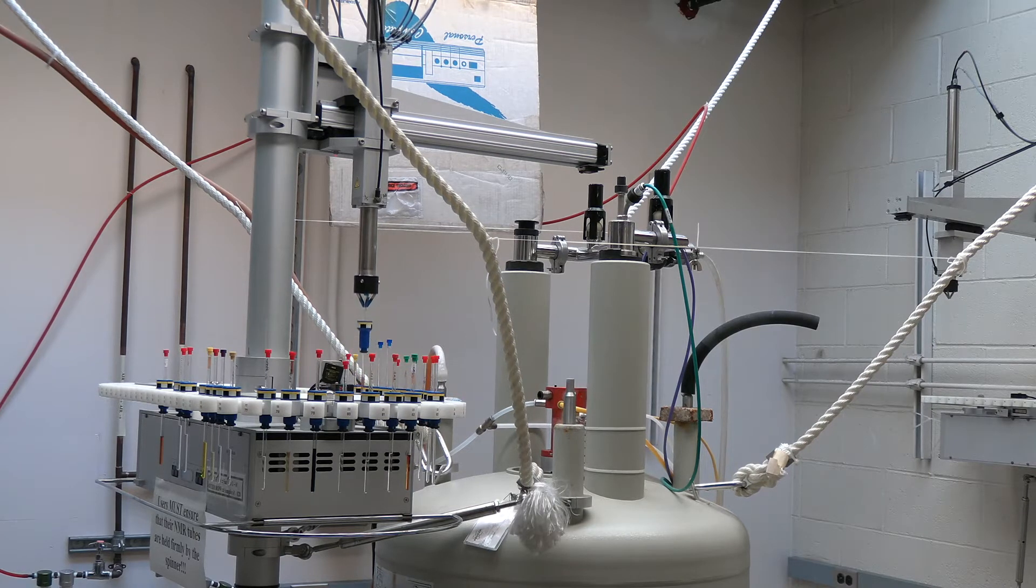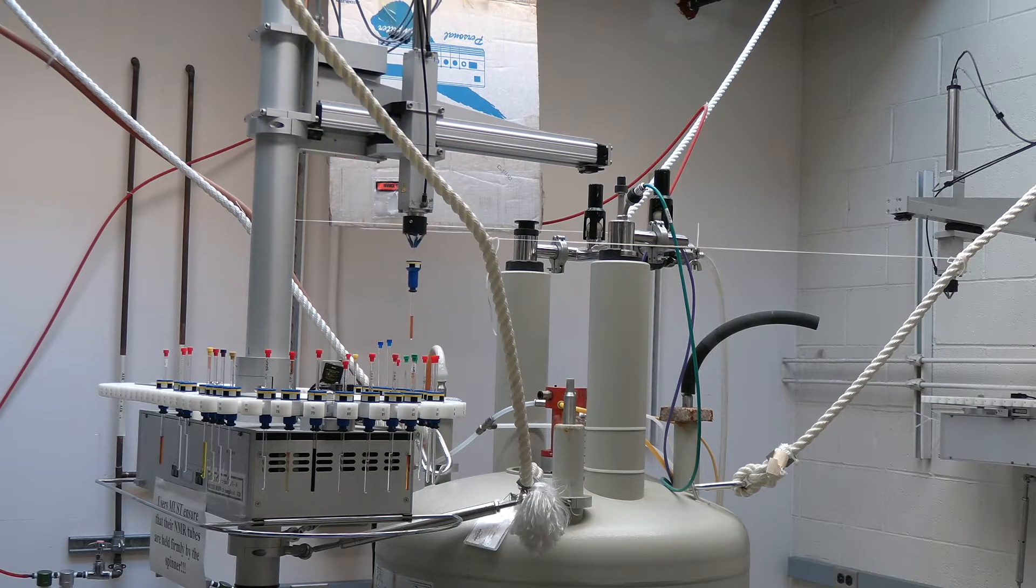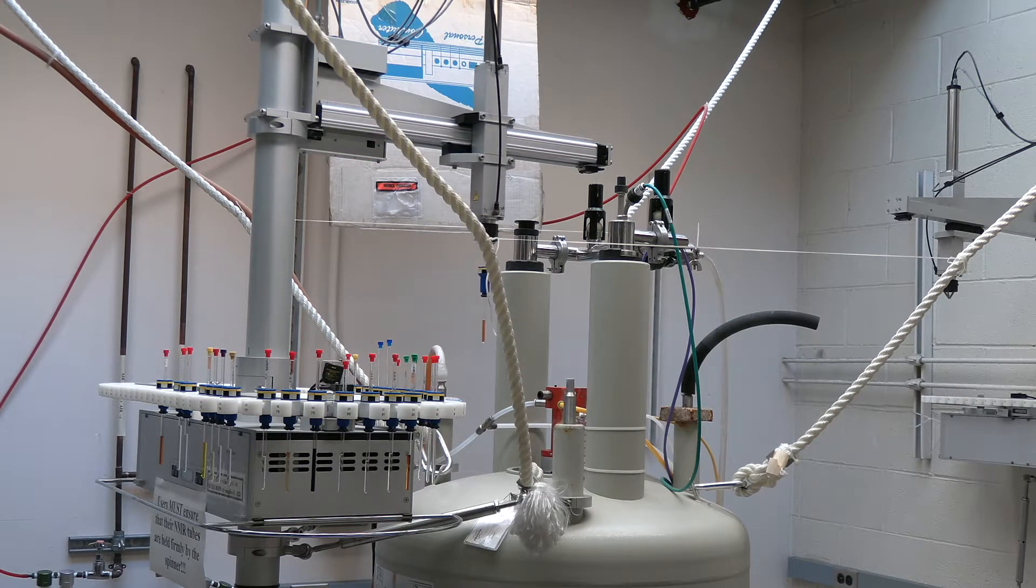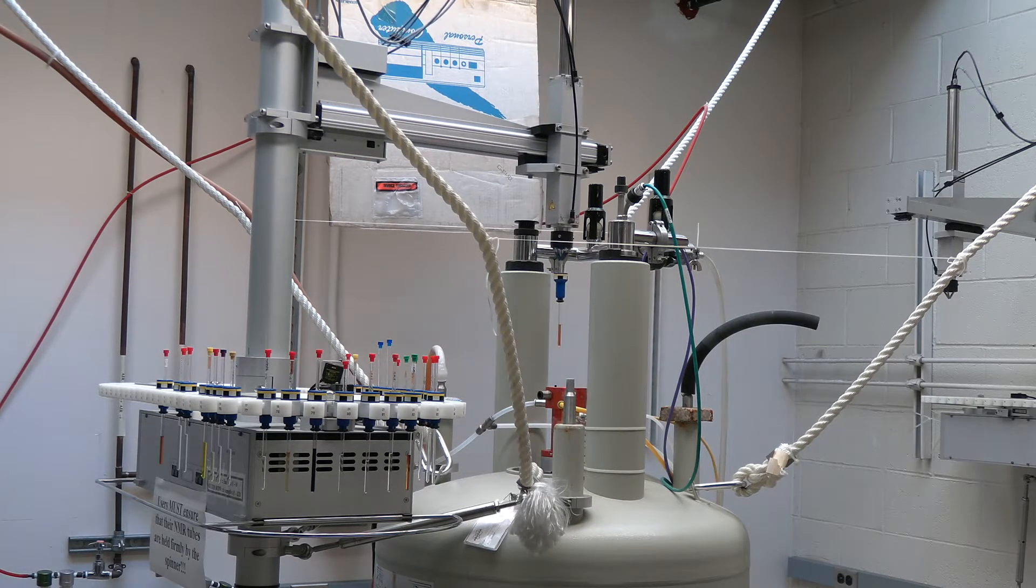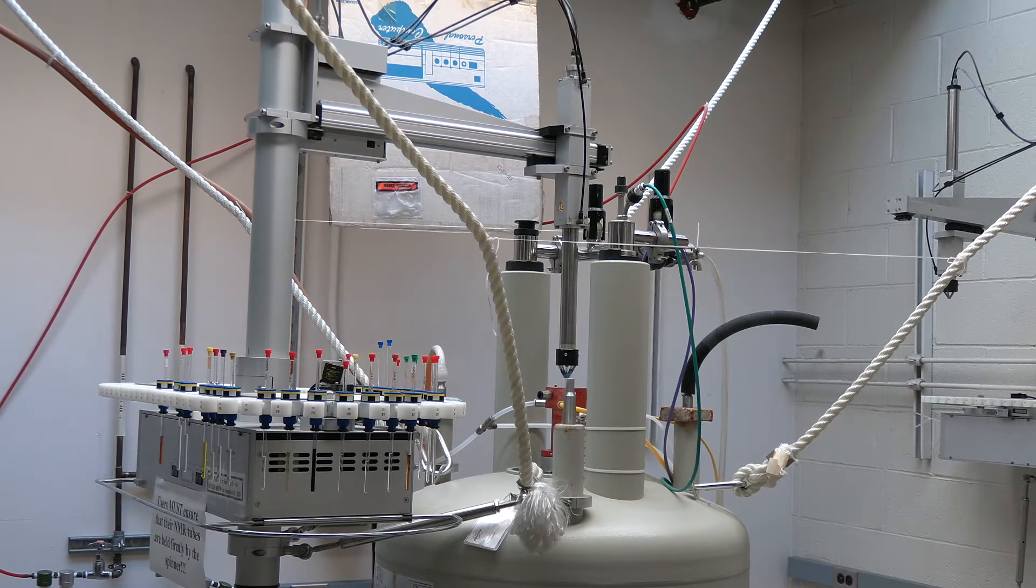Here we are watching how the sample changer transfers samples from the carousel to the instrument. You'll note that the samples are picked up at the top of the NMR tube. This is important because if your tube is not tall enough the arm will not actually be able to reach it and pick it up.